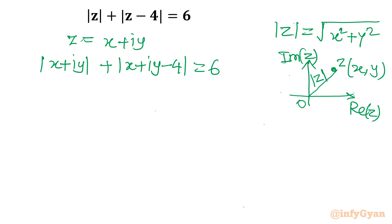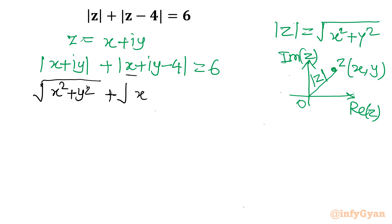Now I will apply the modulus formula. So the first term becomes square root of x squared plus y squared. The second term: the real part is x minus 4, so it becomes square root of x minus 4 whole squared plus y squared, and the whole expression equals 6.